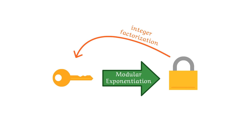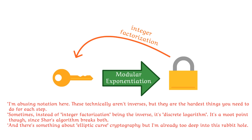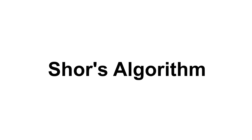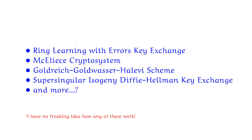Unfortunately, the particular one-way function that most of the internet uses can be broken by quantum computers. They make it easy to get the private key, but only because there happens to be an algorithm to do it that performs very well when run on a quantum computer. To solve this problem with existing technology, new mechanisms could be built on different one-way functions, particularly ones that no one knows how to break.